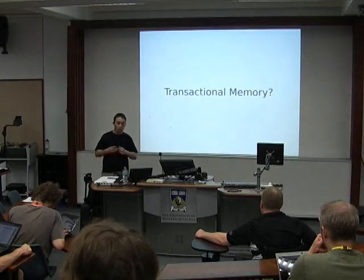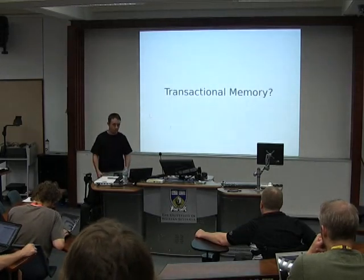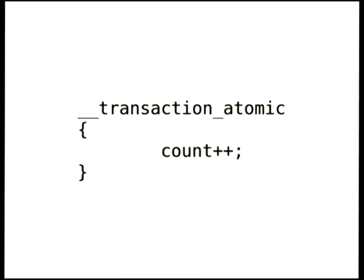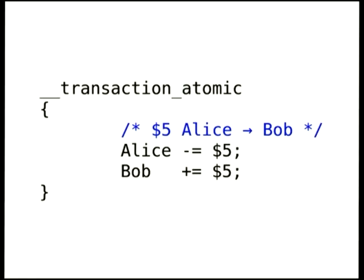So what is transactional memory? It's a new concurrency primitive, a new sort of atomic operation. You can actually do this in GCC 4.7 today — it will fall back to a software mechanism unless you've got hardware support, but GCC compiles down to the hardware primitives. This count will be atomic and other processors won't be able to race. Here's another example: say you're doing a financial transaction transferring $5 from Alice to Bob. You take $5 off Alice, add $5 to Bob, and someone looking at this will either see both of those changes or neither — not something in between.